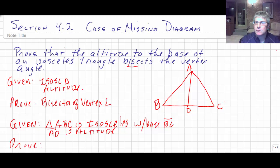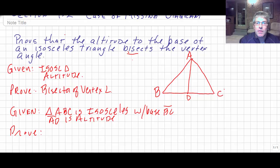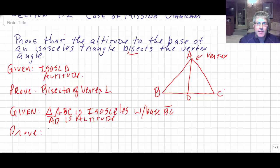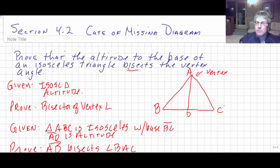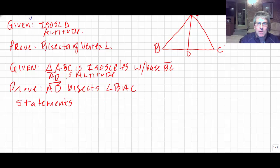And our prove: we're trying to prove that this altitude also bisects the vertex angle. So that means the angles up here at the vertex — this is our vertex — we want to bisect that big angle A. So we're trying to prove that AD bisects angle BAC.